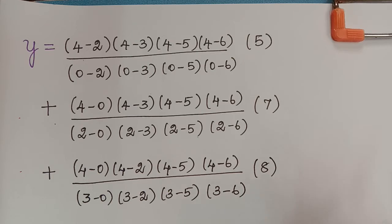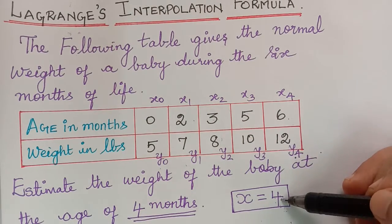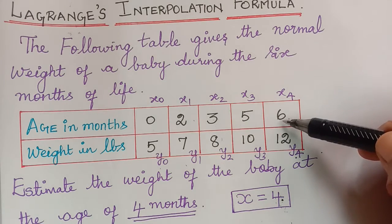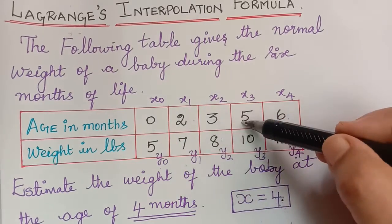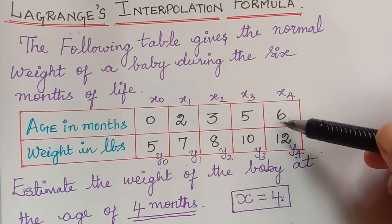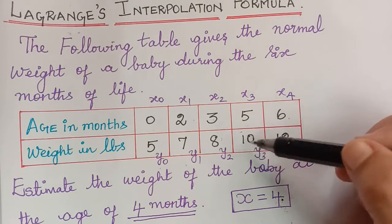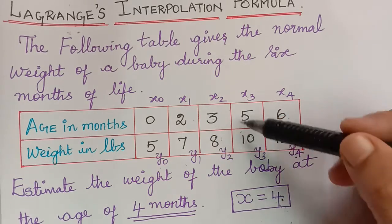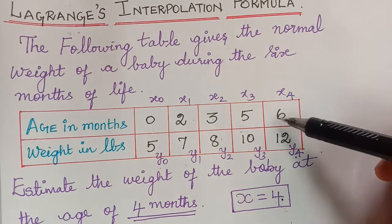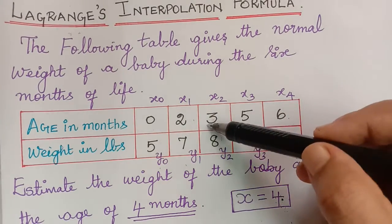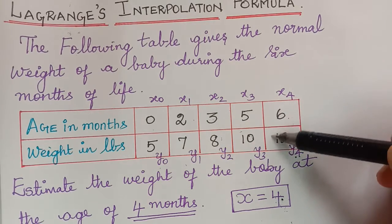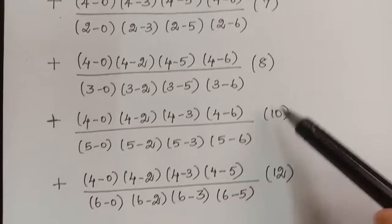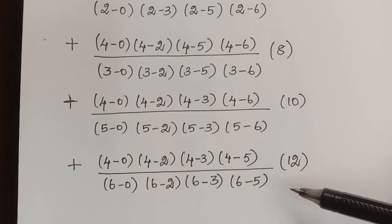For the fourth term, x3 which is 5 is left out. The numerator is 4 minus 0, 4 minus 2, 4 minus 3, 4 minus 6, divided by 5 minus 0, 5 minus 2, 5 minus 3, 5 minus 6, multiplied by y3 which is 10. For the fifth term, leaving x4 which is 6, the numerator is 4 minus 0, 4 minus 2, 4 minus 3, 4 minus 5, divided by 6 minus 0, 6 minus 2, 6 minus 3, 6 minus 5, multiplied by y4 which is 12. These two have been done in the same method.